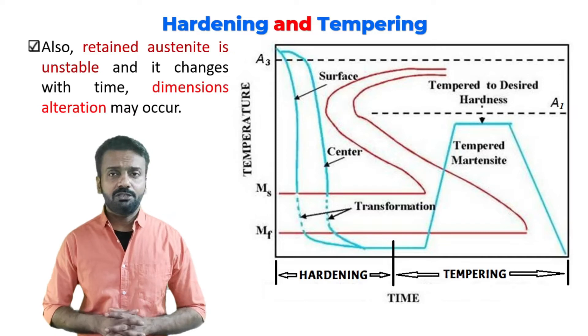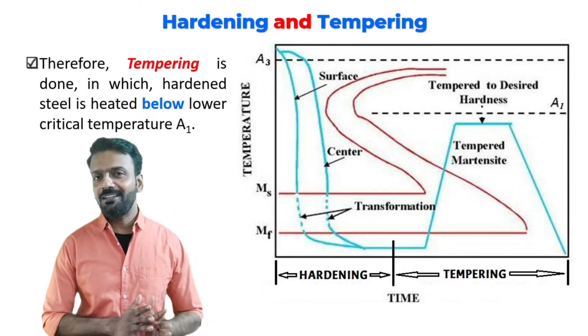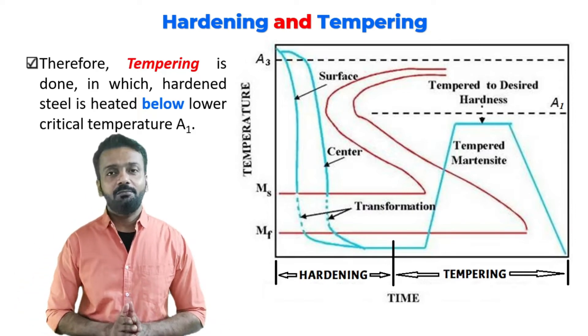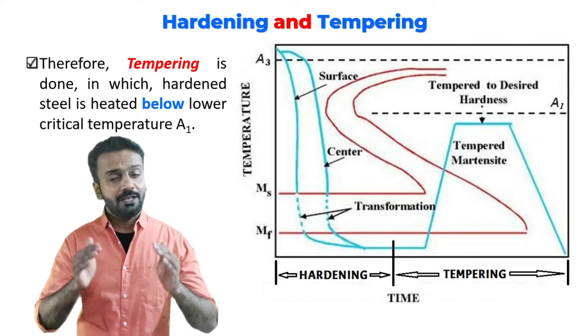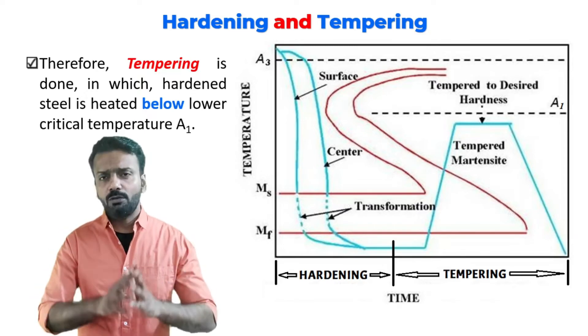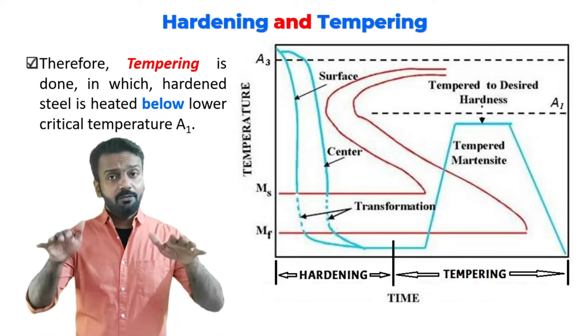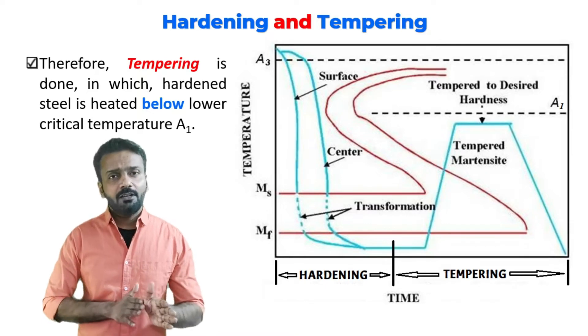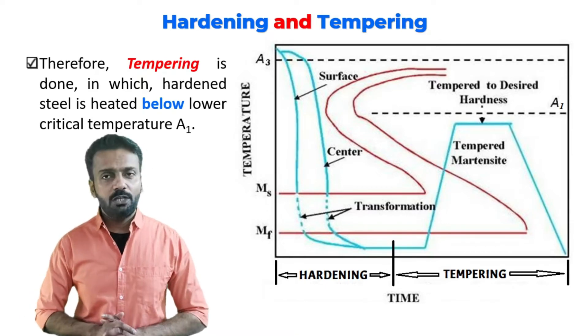Therefore, tempering is carried out. In tempering heat treatment, we are again heating the same material but to a lower temperature below A1. A1 is 727 degrees Celsius - we are heating below A1 at around 700 degrees Celsius and holding at that temperature for some time, then cooling the material.